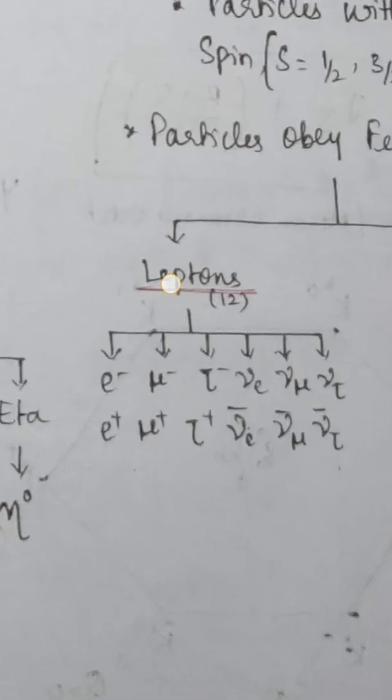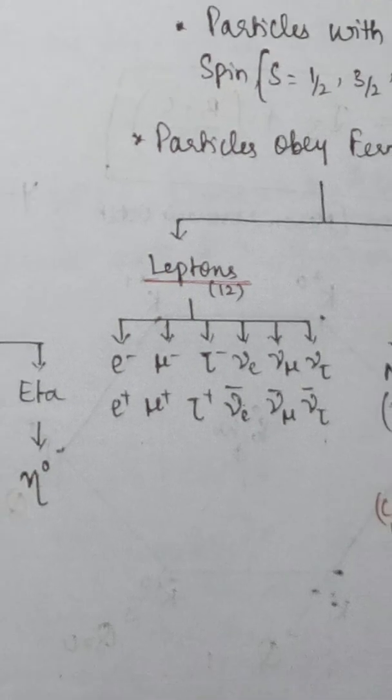The 12 lepton particles are: first, electron; next, muon; next, tau. Then the neutrinos: electron neutrino, muon neutrino, and tau neutrino.